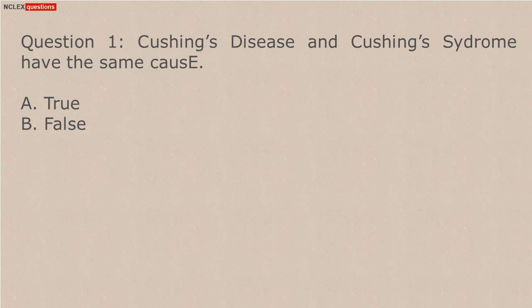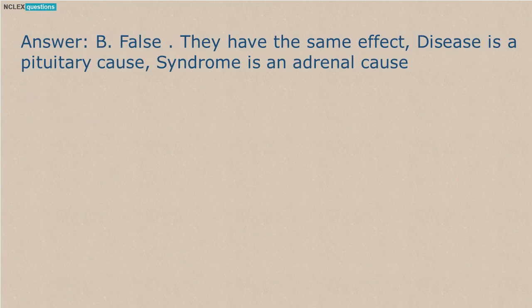Question 1. Cushing's disease and Cushing's syndrome have the same cause. A. True. B. False. Answer: B. False. They have the same effect, not the same cause. Cushing's disease is a pituitary cause; Cushing's syndrome is an adrenal cause.